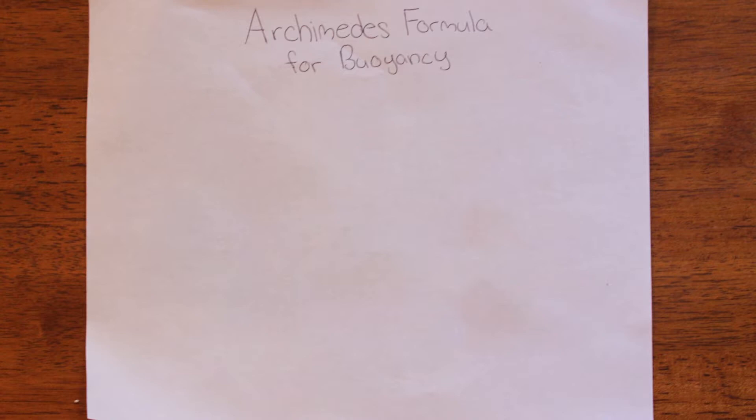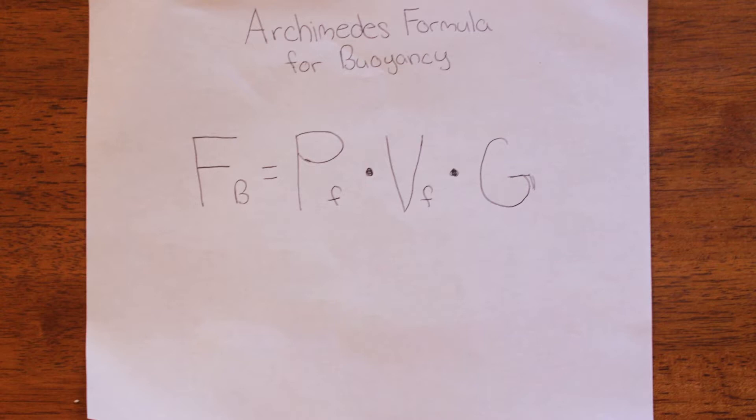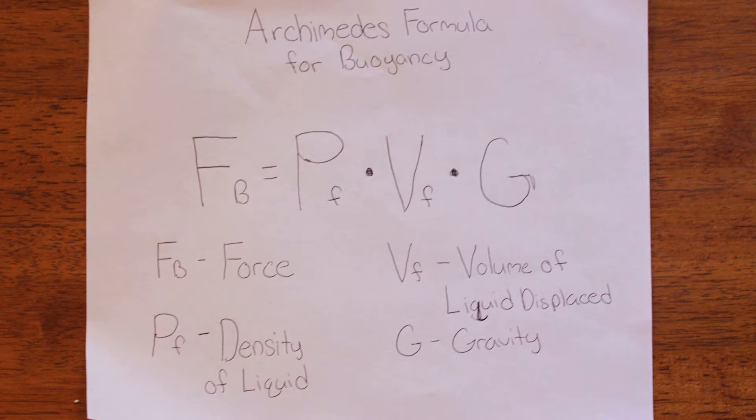To make a concrete boat float, the force of buoyancy must be equal to the force of gravity pushing it down. Buoyancy is found by F of B equals P of F times V of F times G — F of B being force, PF being density of liquid, VF being volume of liquid displaced, and G being gravity.